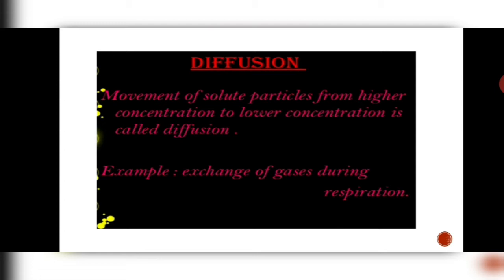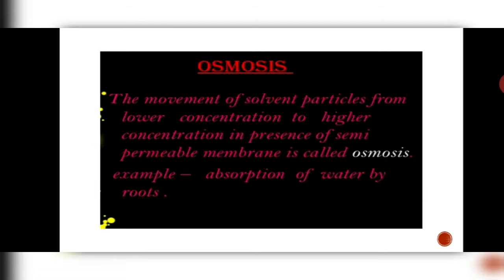Carbon dioxide is more inside the cell, so carbon dioxide will be given outside. This movement of oxygen and carbon dioxide is known as diffusion. The next process is osmosis. The movement of solvent particles like water from a region of low concentration of solute to high concentration of solute through a semi-permeable membrane is called osmosis. An example is absorption of water by roots.